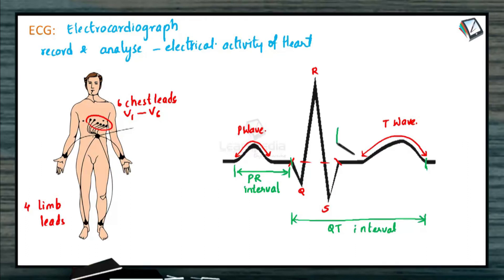Then there is ST segment. This segment extends from the end of the S wave to the beginning of the T wave. This is the isoelectric or the zero voltage period. And so is the case with the PR segment. It also indicates the isoelectric or the zero voltage period.